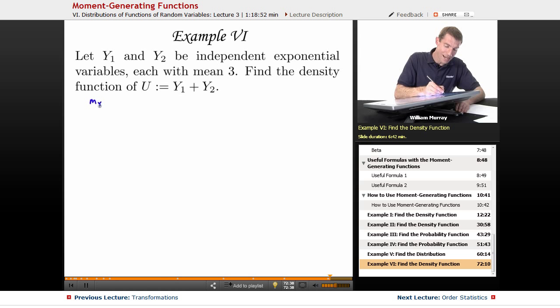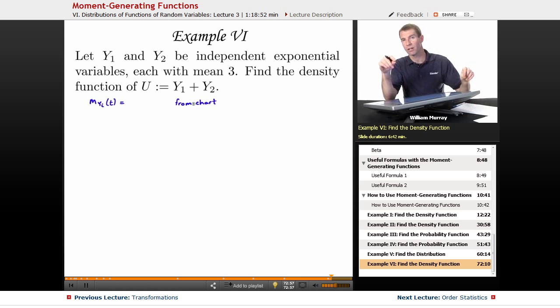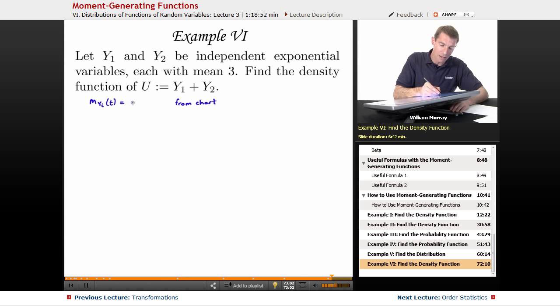So m sub yi, the individual ones, I'm going to look up my moment generating function for the exponential variable on my chart, and that's earlier on in this lecture. If you scroll back in this lecture you'll see moment generating functions for continuous variables, and so the one for the exponential function is 1 minus beta t to the negative 1, but in this case our mean is given at beta equals 3.